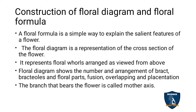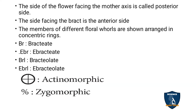The floral diagram shows the number and arrangement of bracts, bracteoles, floral parts, fusion, overlapping, and placentation. The branch that bears the flower is called the mother axis — the stalk where the flower arises from the stem. The side of the flower facing the mother axis is called the posterior side, and the side facing the bract is the anterior side.